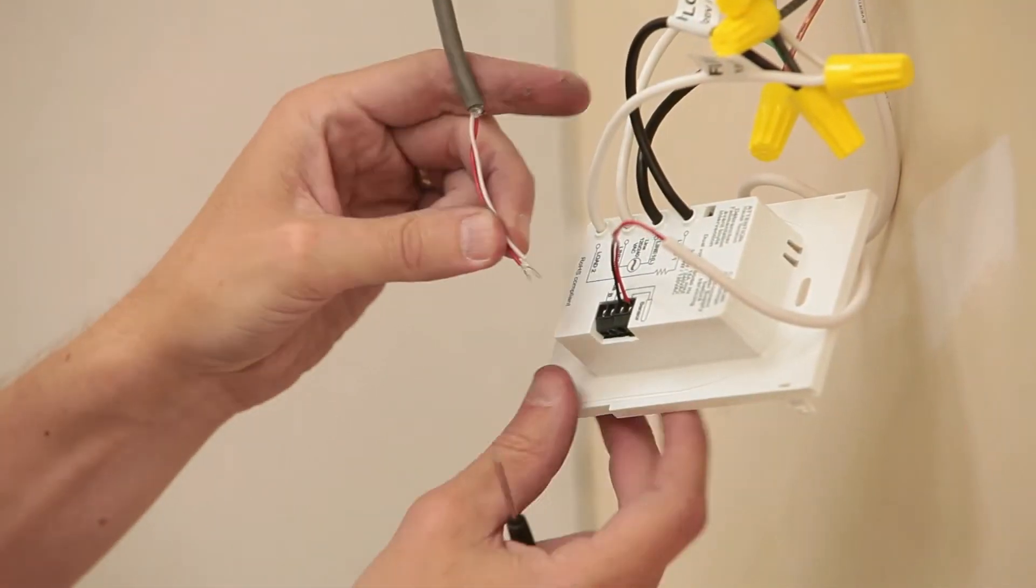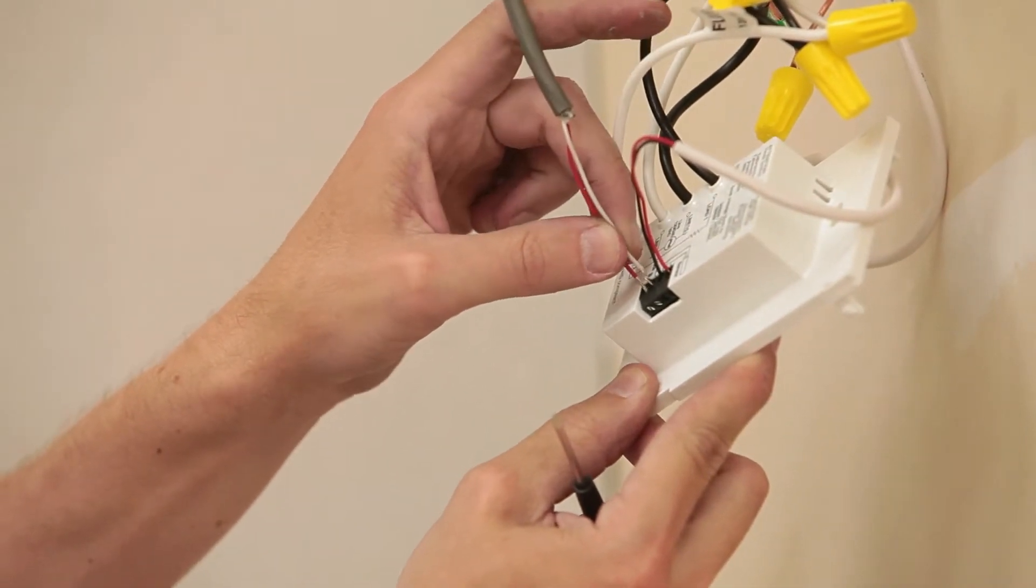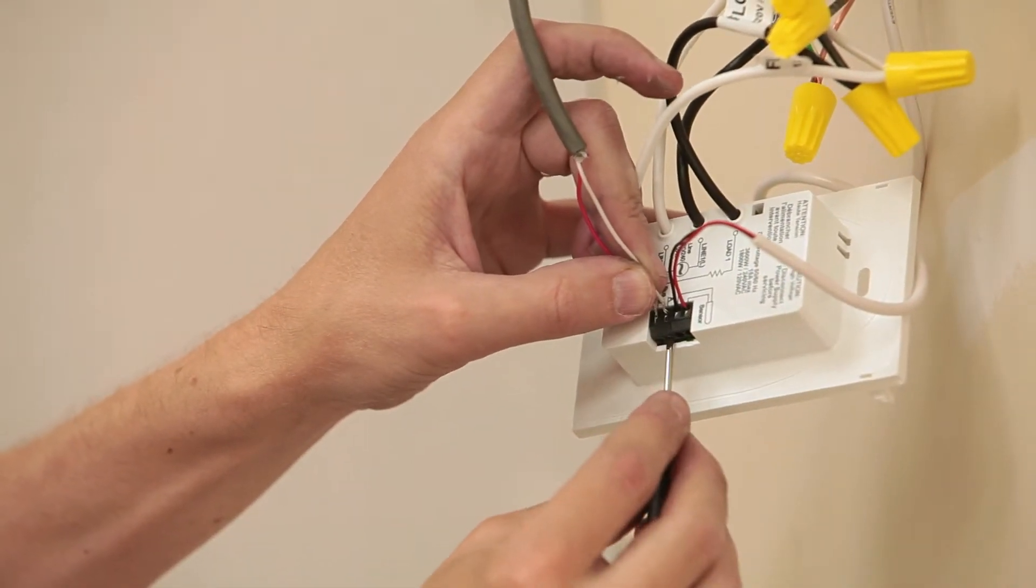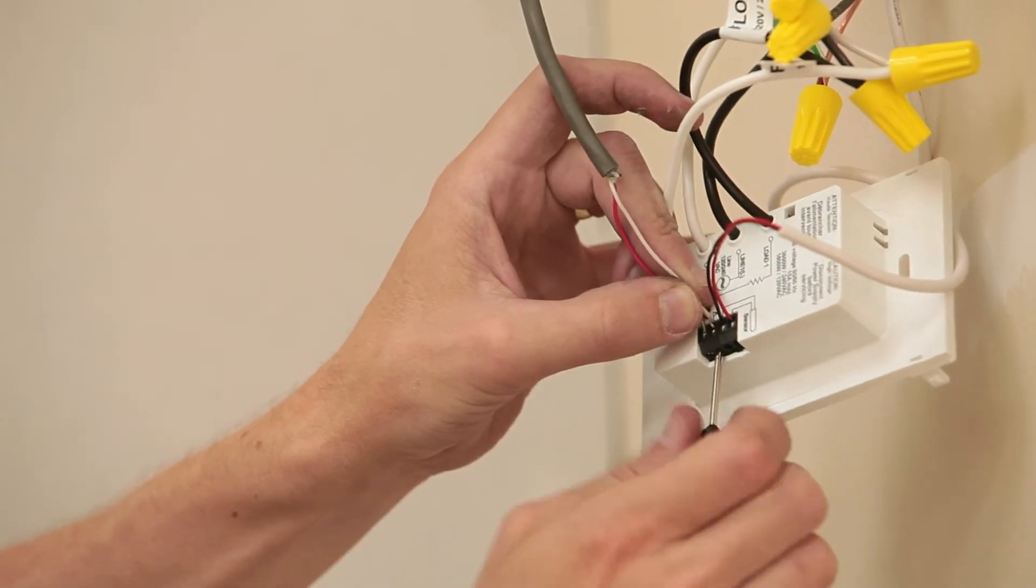If a relay was required by your installation, connect the wires from the relay to the bus A and B terminals on the SunStat. These terminals are polarity sensitive, so make sure the wire ends are connected the same. Refer to the manual for additional details.